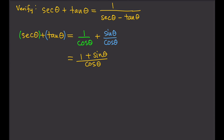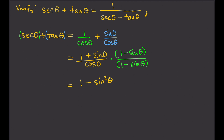It doesn't seem like from here we can get to the right-hand side just by relying on the identities we know. So we're going to use an old algebraic technique: multiply both the numerator and denominator by one minus sine theta. By doing that, the numerator becomes one minus sine squared theta — using the FOIL method — and the denominator becomes cosine theta times the quantity one minus sine theta, which expands to cosine theta minus sine theta cosine theta.